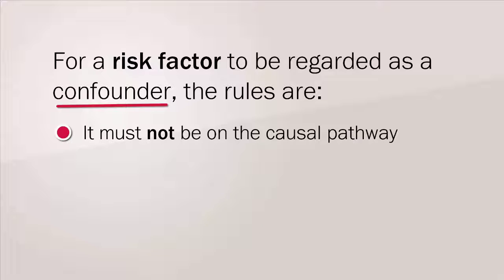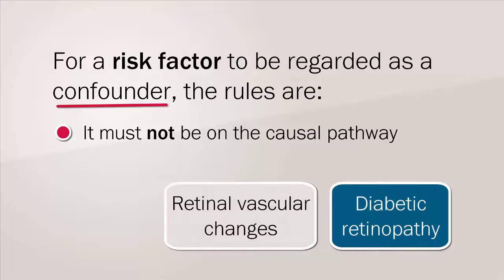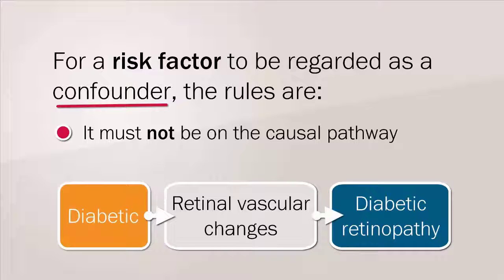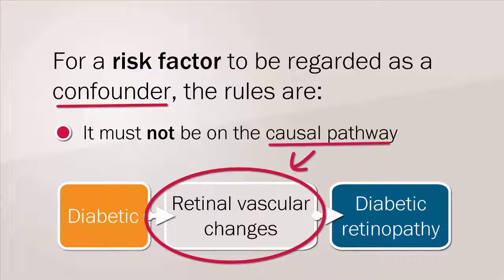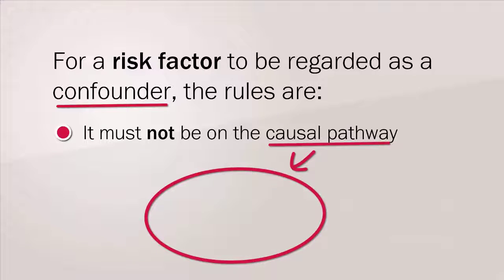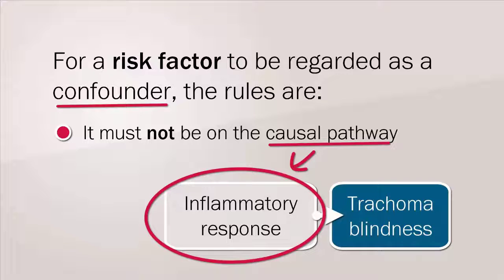An example of this would be retinal vascular changes and diabetic retinopathy. These vascular changes, which are a result of being diabetic, lead to diabetic retinopathy. That is, this is on the causal pathway. Another example would be inflammatory response and trachoma blindness.